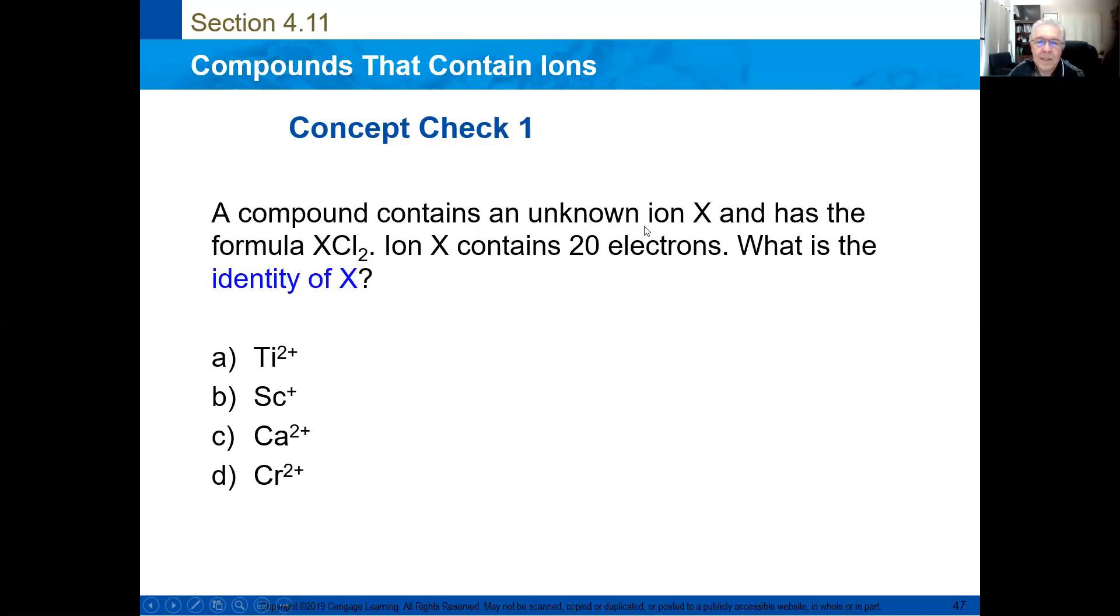A compound contains an unknown ion X and has the formula X2O3. X contained 20 electrons. What is the identity of X? Then you say 22 electrons. And if it lost two, the charge is positive two. Then two plus 20 is 22. And the element with atomic number 22 is titanium.